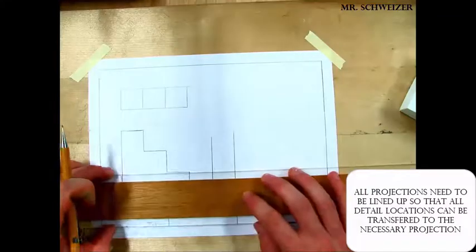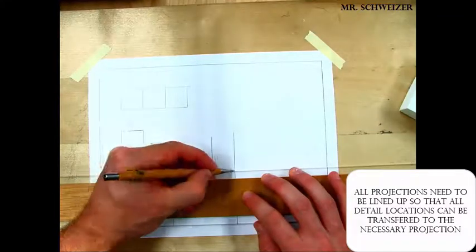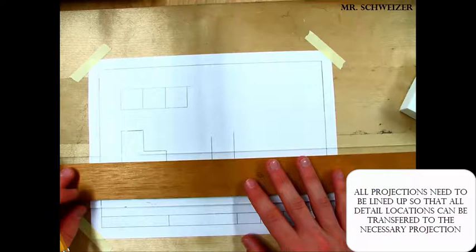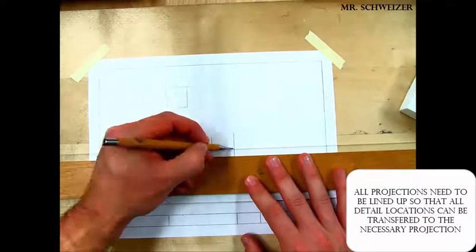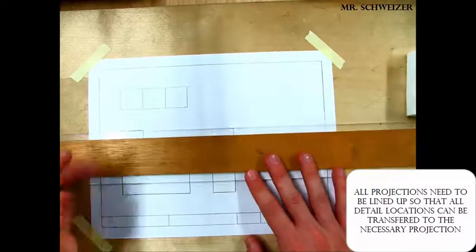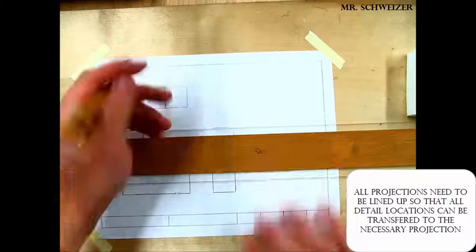Now I'm going to use my t-square to transfer over the feature locations to the right side. I line up my t-square with that feature location and I just draw a straight line across the object where it needs to go.